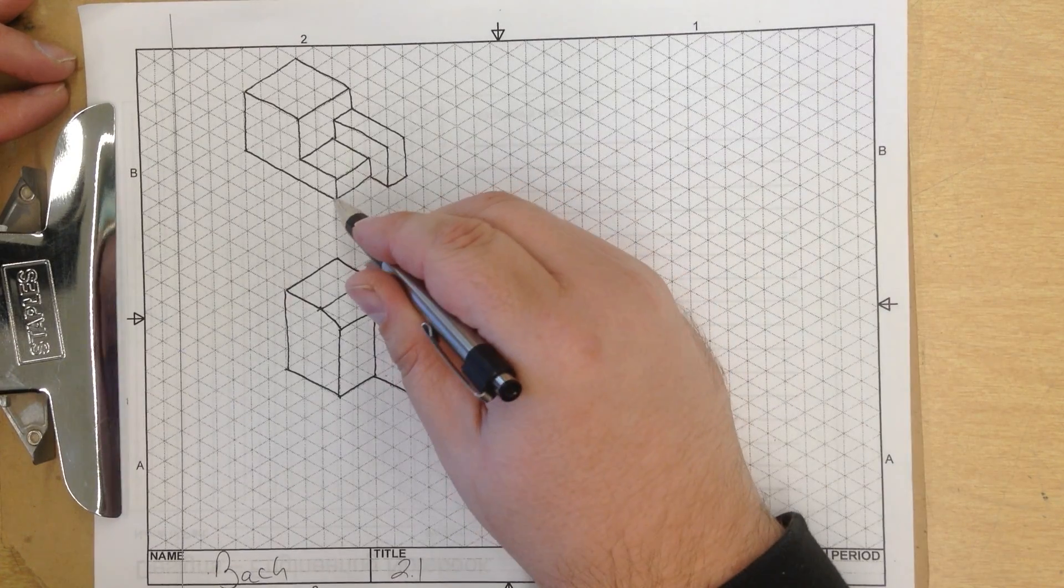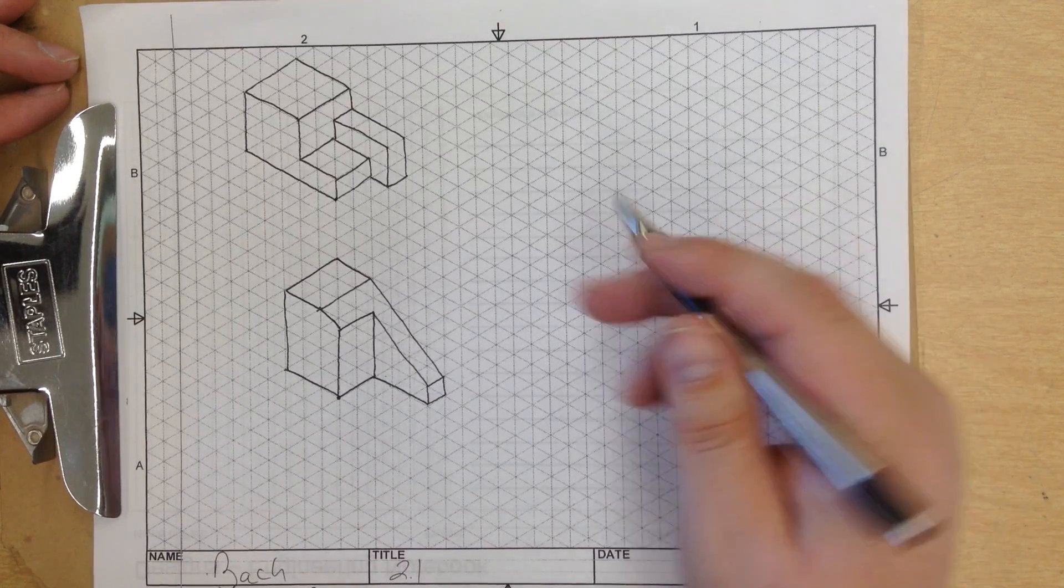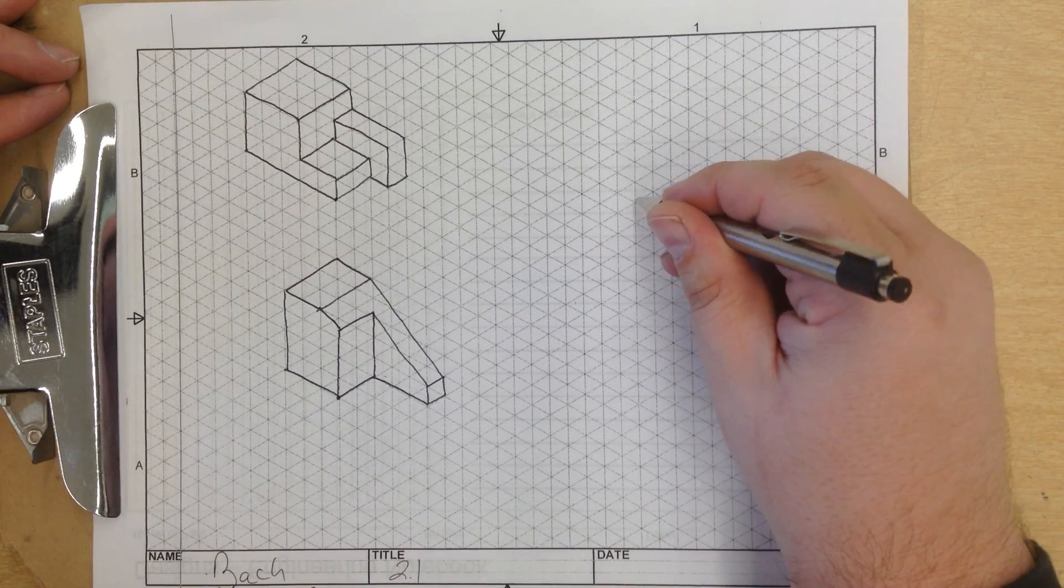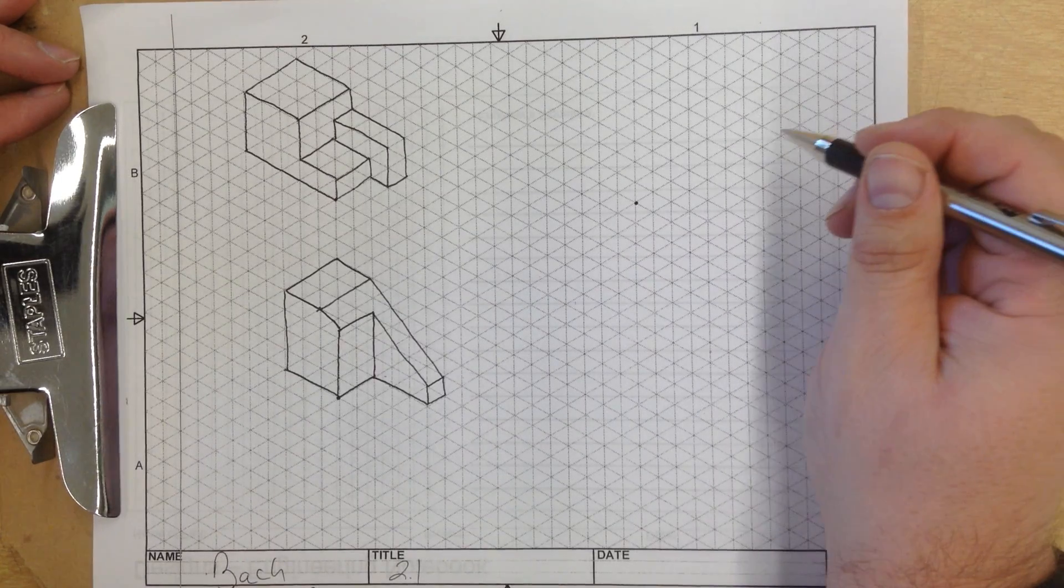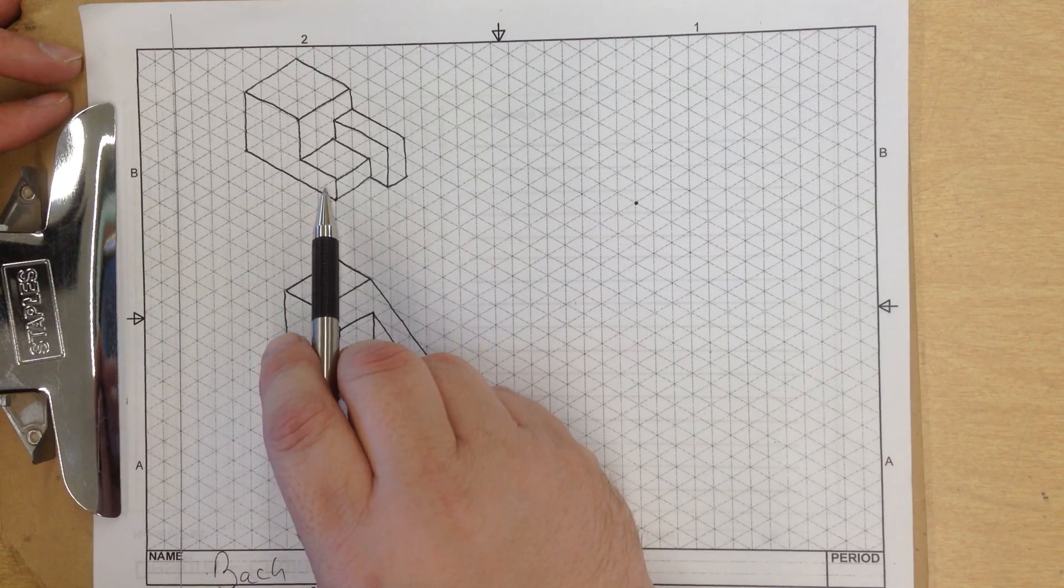The easiest way is to start with an origin point. The origin point for me is always going to be the point closest to me in the drawing. So I'm going to go ahead and start right here with an origin point. Just mark it on the isometric paper.